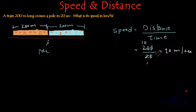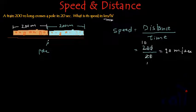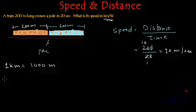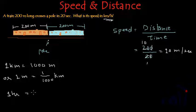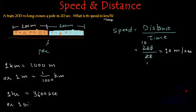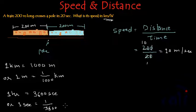10 meters per second is the speed of the train. But they have asked for the speed in kilometers per hour. To convert 10 meters per second, we need to convert meters into kilometers: 1 kilometer equals 1000 meters, or 1 meter equals 1/1000 kilometers. Similarly, 1 hour equals 3600 seconds, or 1 second equals 1/3600 hours.